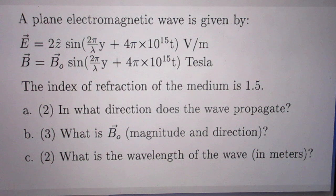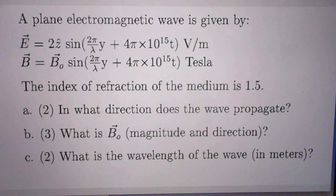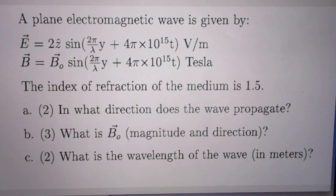Tesla — the famous physicist and entrepreneur. The index of refraction of the medium is 1.5. The first question: in what direction does the wave propagate? The second question: what is B0 — magnitude and direction? The last question: what is the wavelength of the wave in meters?